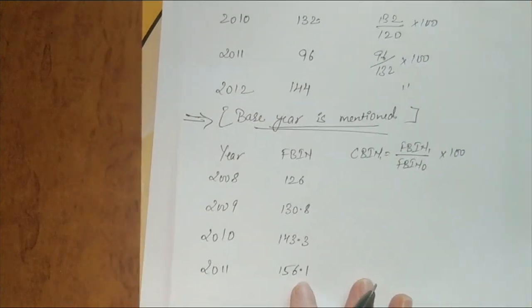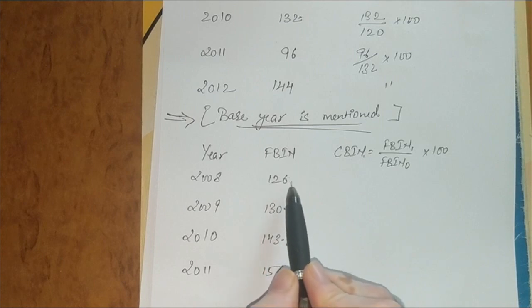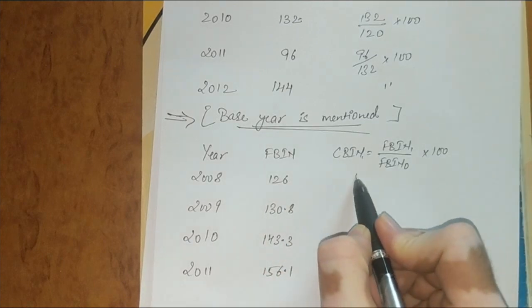If the base year is mentioned in the question, then the first FBN is the first CBN.